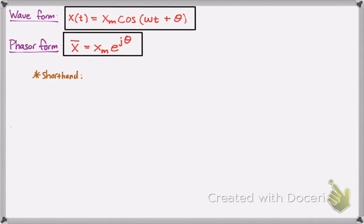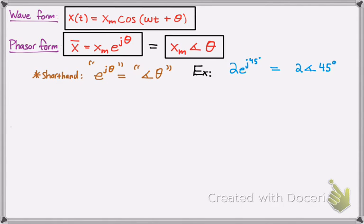And now the shorthand notation for this phasor form, since you'll be doing a lot of calculations with phasor form, is simply converting that e to the j theta, we're just going to write that as angle theta. And I'm going to give you an example, just so you kind of know what I'm talking about. So 2e to the j 45 degrees, or j 45, would just be written as 2 angle 45 degrees. So that's the shorthand notation, so we don't have to deal with stuff later. So that means the phasor form can also be written by shorthand as this. And this will be much simpler to look at when you're doing calculations.